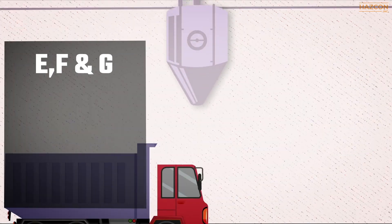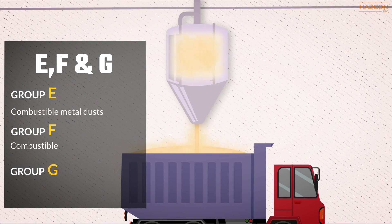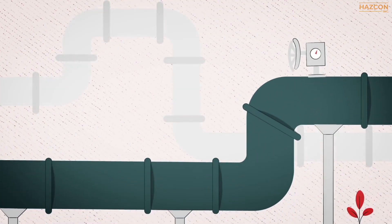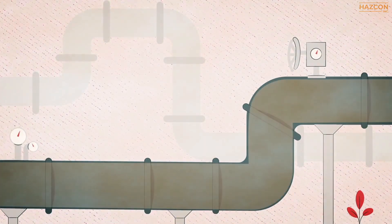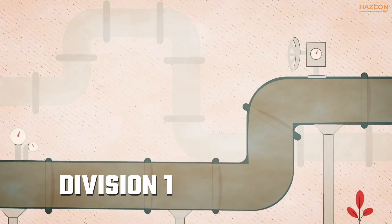The three dust groups E, F, and G in North America further define dusts as follows: Group E — combustible metal dust; Group F — combustible dusts that are not metal; and Group G — solid particles including fibers. If there is conductive metal dust in the area, for example, then the entire area where the dust may collect is considered to be Division 1.